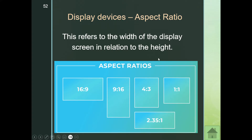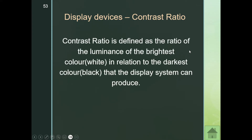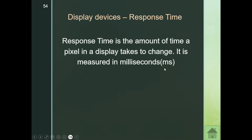Then we have our contrast ratio, which is defined as the ratio of the luminance of the brightest color in relation to the darkest color that the display can produce — that is your contrast ratio. Your response time is the amount of time a pixel in a display takes to change. It's measured in milliseconds, and obviously you want that to be extremely quick.